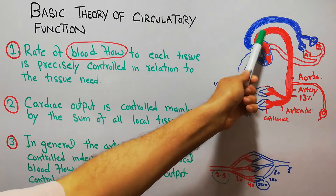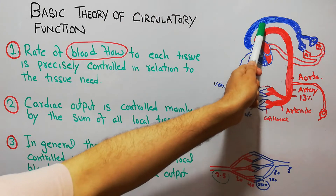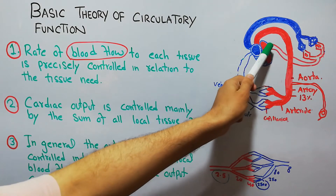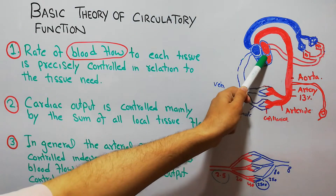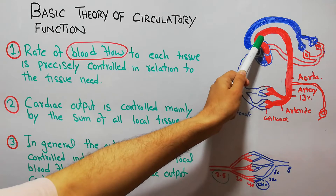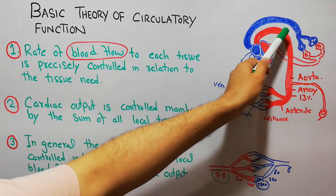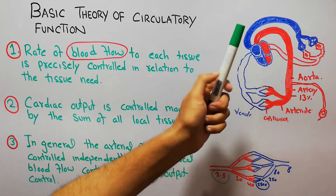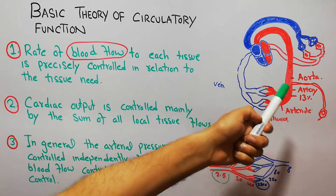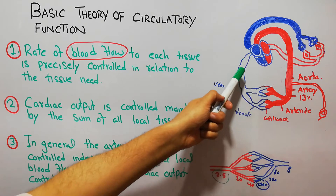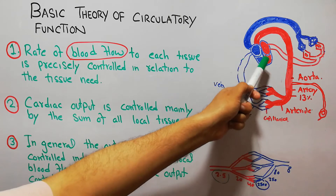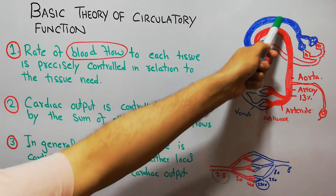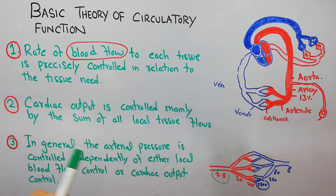The pulmonary circuit takes the deoxygenated blood to the lungs, where it gets oxygenated and comes back to the left side of the heart. The left side of the heart pumps the blood into the whole body. The body utilizes the oxygen and nutrients, then returns the waste material to the right side of the heart.